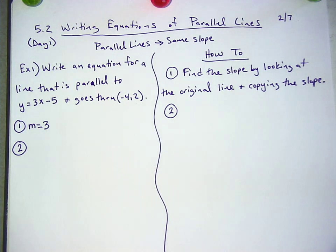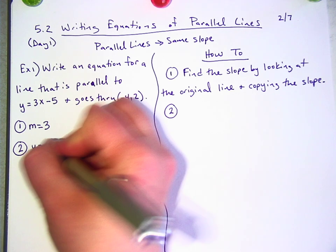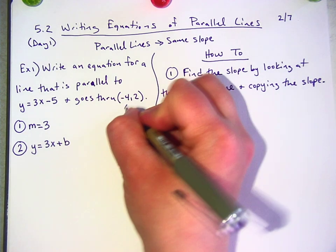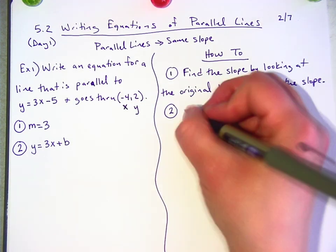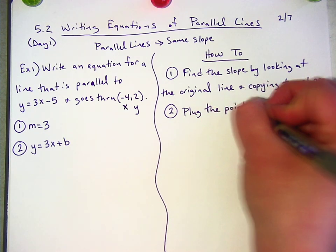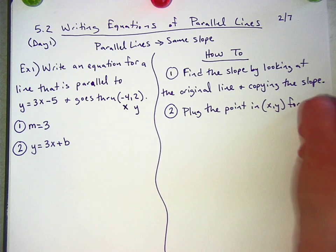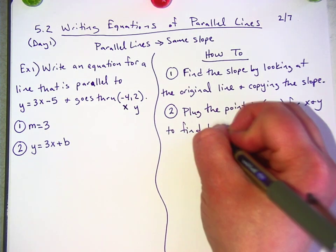Renee? Do you have to put the point in for y and x? Yep, so y equals, I've got 3x plus b, and then you're saying that I should put in x as negative 4 and y as 2. So plug the point in, the x, y point, for x and y to find b.